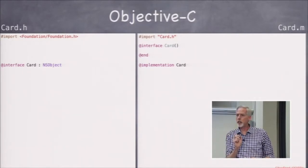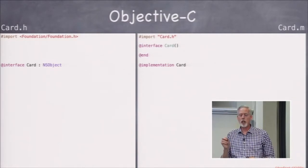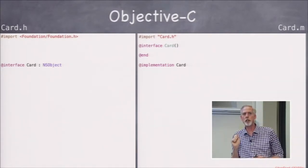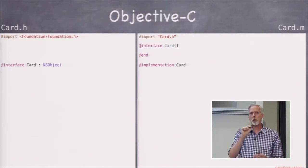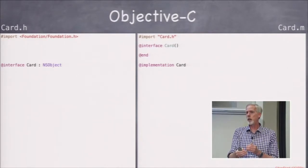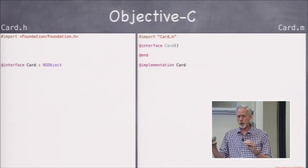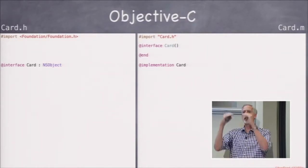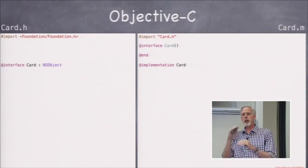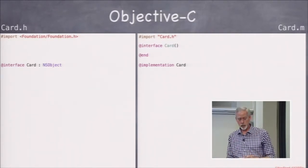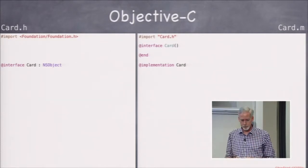We can have private declarations — properties and methods that are private — inside our implementation file using a little @interface ClassName() ... @end block. Objective-C does not require you to declare something before you use it in a file, so you can implement method A which calls method B, then implement method B later in the file. We mostly use this private interface block for private properties.